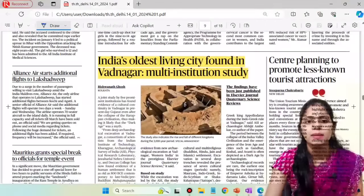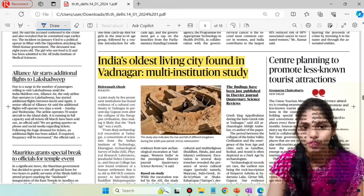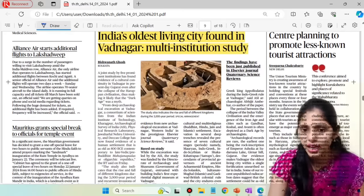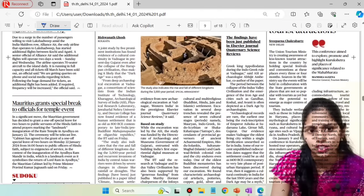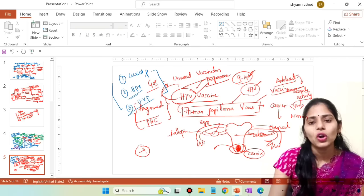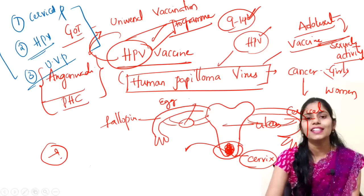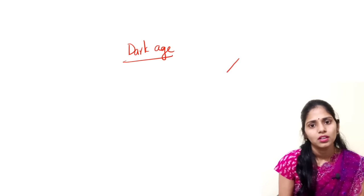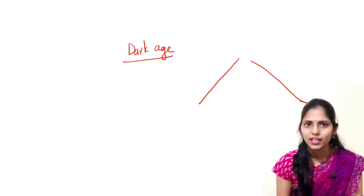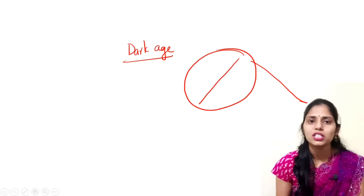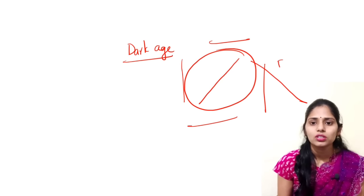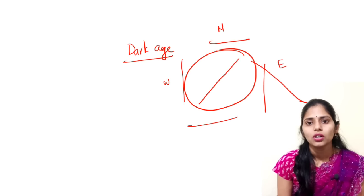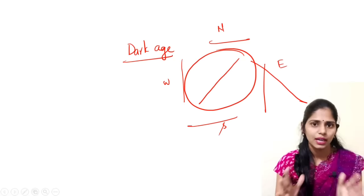The next topic is about India's oldest living city found in Vadanagar, located in Gujarat. This article is talking about a myth, also called a 'dark age.' If you see the flourishing of the Indus Valley Civilization, it flourished along the river Indus. You have to see the dimensions: eastmost, westmost, northmost, and southmost extent of the IVC.